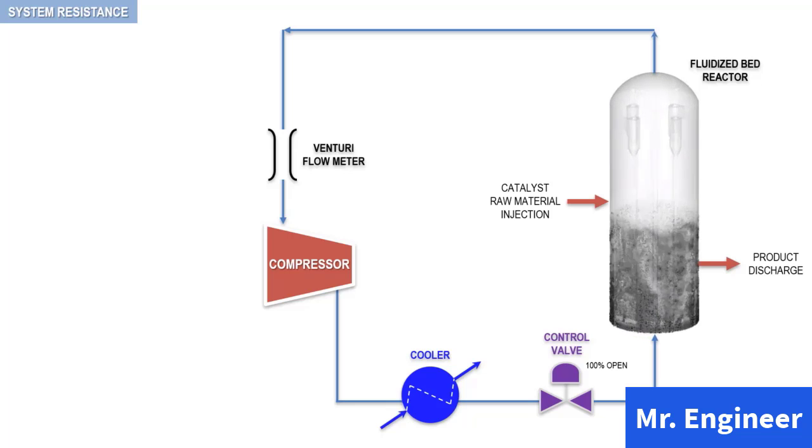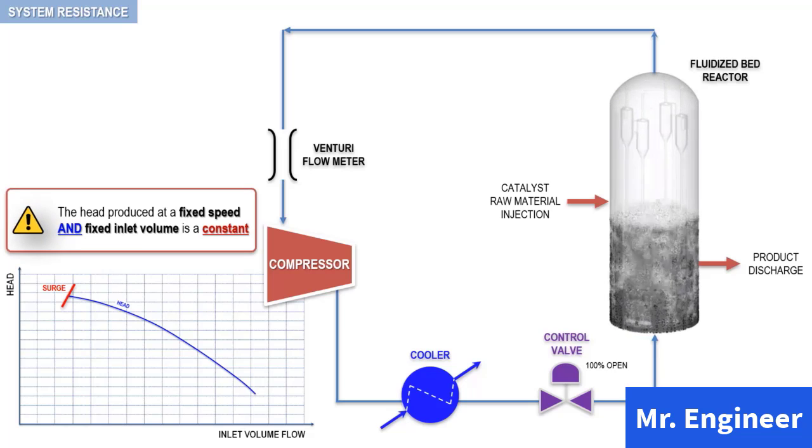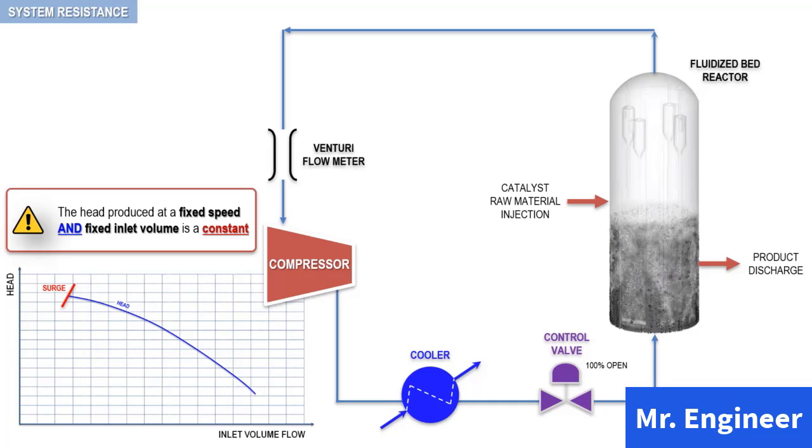In our case, we have the compressor performance curve as provided by the manufacturer for rated inlet conditions. It takes the form polytropic head versus inlet volume flow. Since the compressor operates at a constant rotational speed, then the head produced by the impeller for a given inlet volume flow is a constant, regardless of the inlet conditions. This statement will form the basis upon which we can derive the procedure accounting for the effect of system resistance.